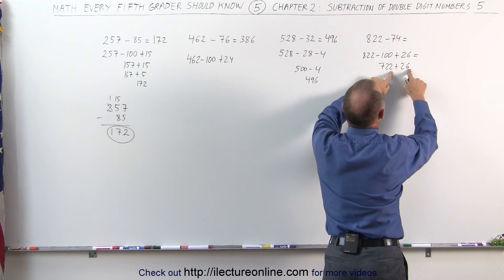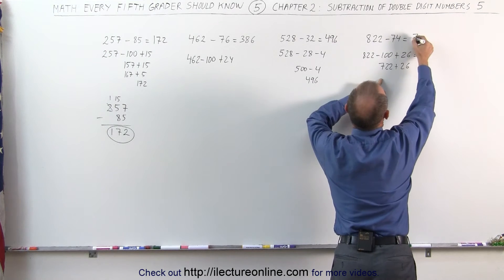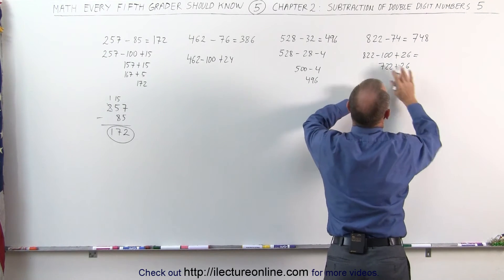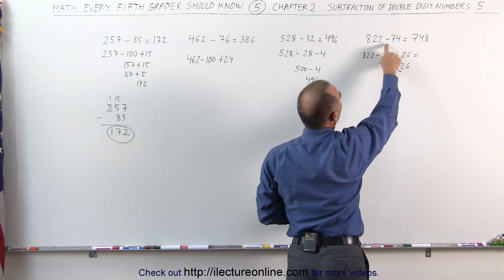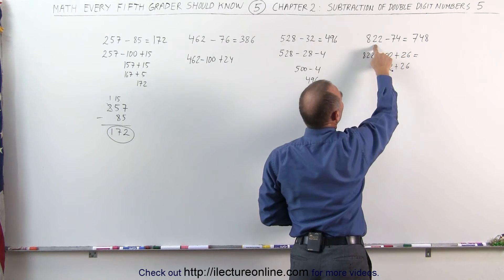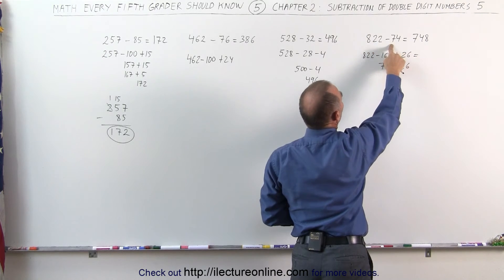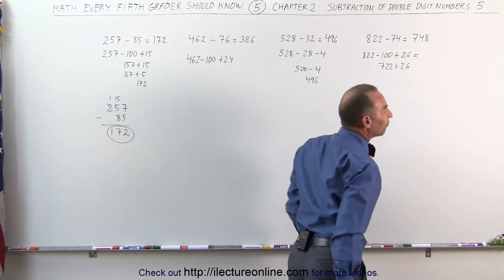2 plus 2 is 4, 2 plus 6 is 8. This becomes 748. Again without writing any of that down, I simply subtract 100, that gives me 822. The difference is 26. 22 plus 26. 2 plus 2 is 4, 2 plus 6 is 8. 748.